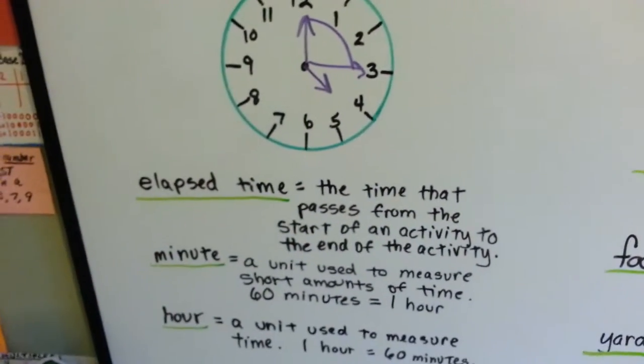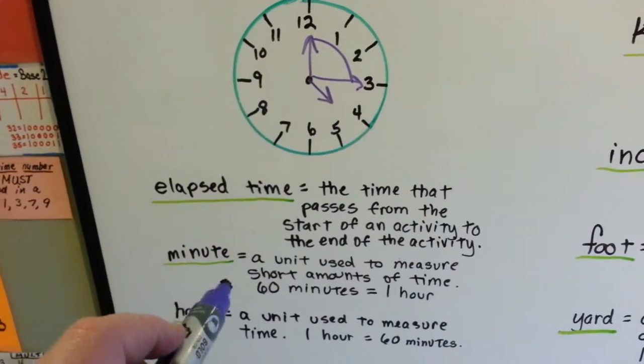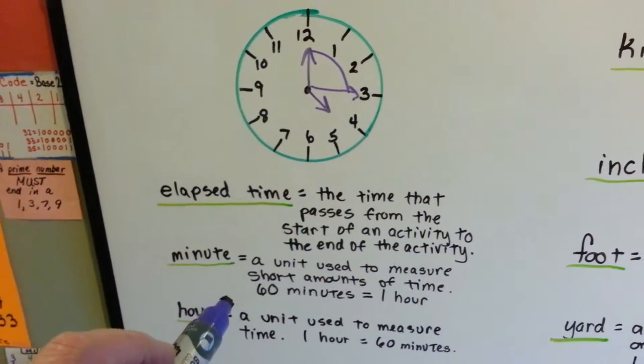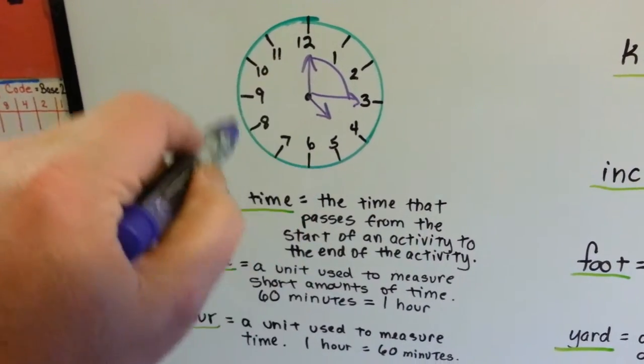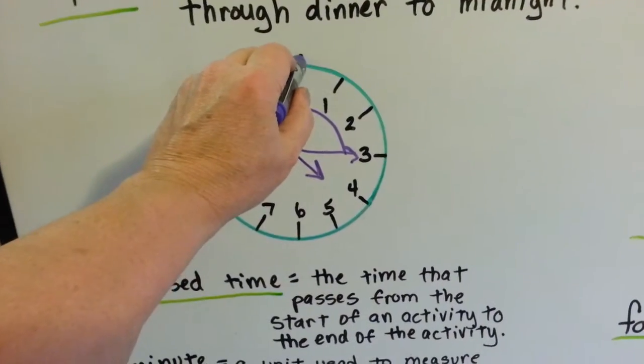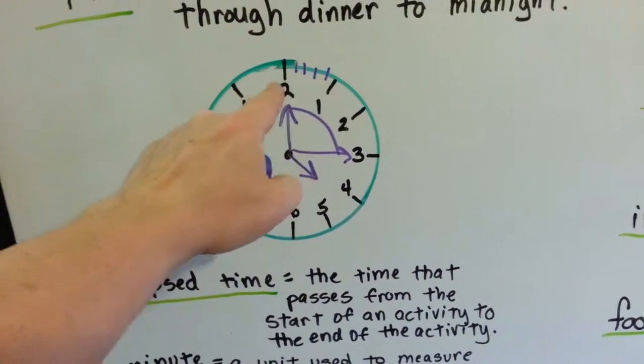So the kids should understand this already. A minute is a unit used to measure short amounts of time. There's 60 minutes in an hour. And each little notch in here is a minute.